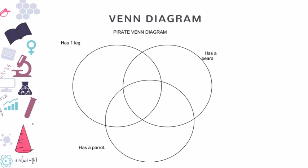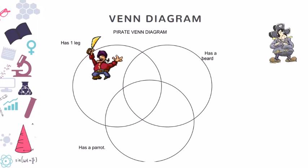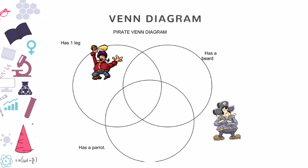Let's take a look on the first guy. This guy has one leg. But does he have a parrot? No. Does he have a beard? No. So we just put him in this. The next guy. He has two legs, so he doesn't belong to the first guy. He doesn't have a parrot, and obviously he doesn't have a beard. So he doesn't belong to any of the circle. We put him outside.